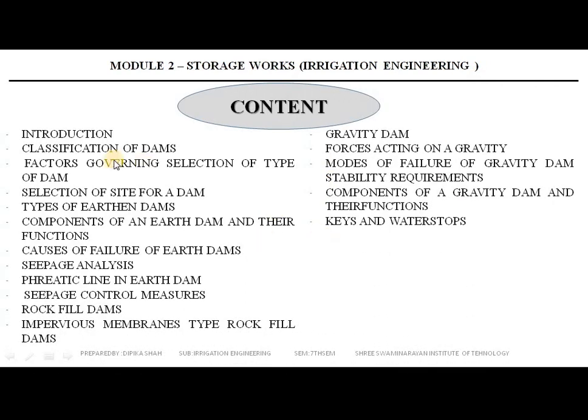In Module 2, we have already studied about the introduction of storage works, introduction of dam, what is dam and classification of the dam. We have also studied about the factors governing the selection of site of a dam. After that, we have also studied about the selection of a site for the dam, types of earthen dam, components of earthen dam, their functions, causes of failures of earthen dam, seepage analysis, and in the last lecture, we have also studied about what is the phreatic line in earthen dam and seepage control measures.